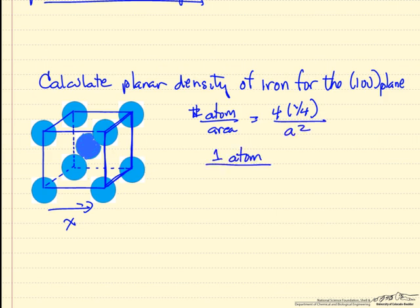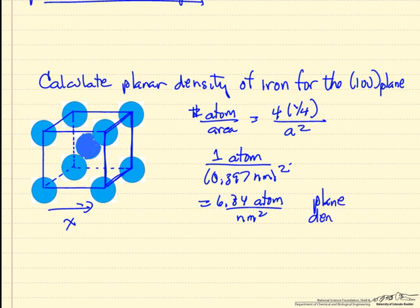So I have 1 atom, and the area is 0.397 nanometers squared. So this is 6.34 atoms per nanometer squared. And that's the planar density for iron for the (100) plane.